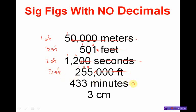Here we go. There are no decimal places, so once again I am coming in from this direction. I hit the 3, I stop, and I count the numbers that remain: 1, 2, 3. There are three significant figures in my measurement. And lastly, I come in this way. There are no zeros to go through. I hit the 3. I have one significant figure.